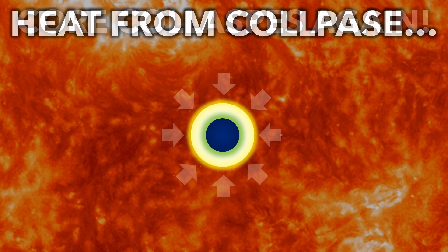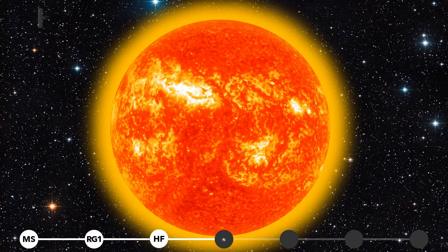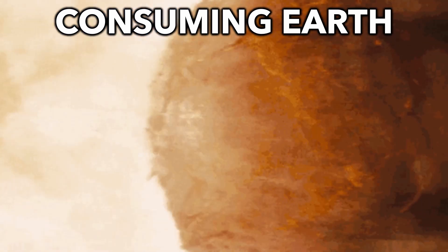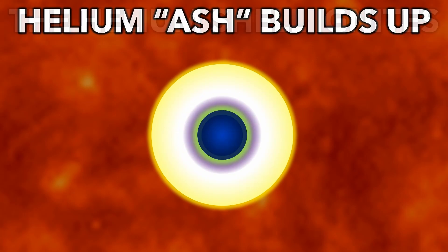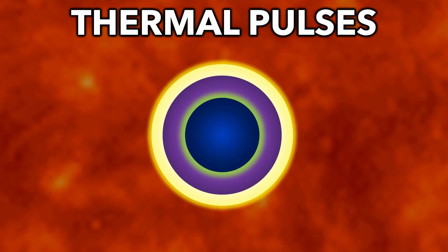So, like before, it collapses, and the heat from the collapse greatly increases fusion, making the star become an even bigger red giant, even engulfing the entire Earth. The hydrogen shell fusion produces helium ash, which builds up and fuses explosively. This cycle continues for 20 million years, creating violent thermal pulses.